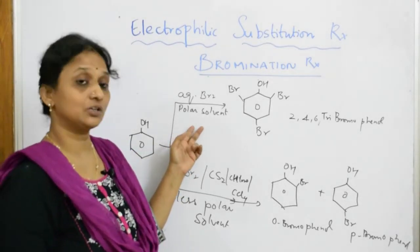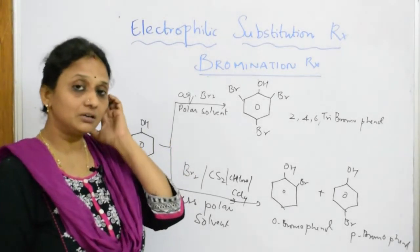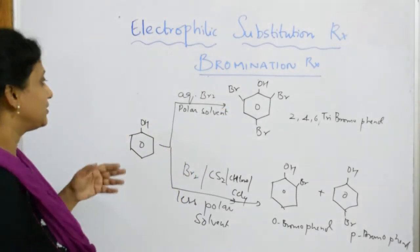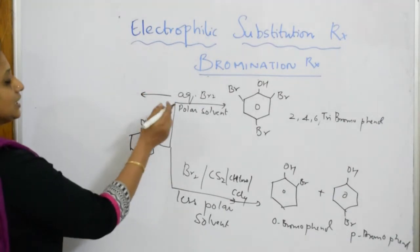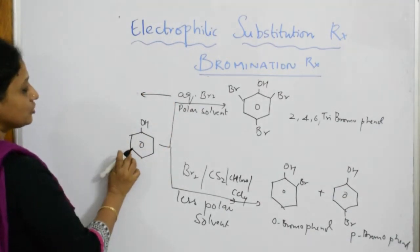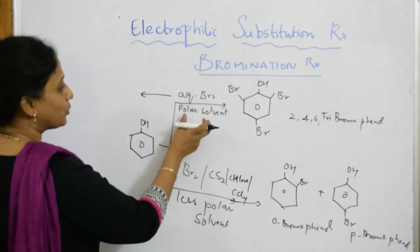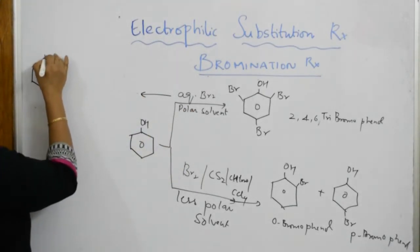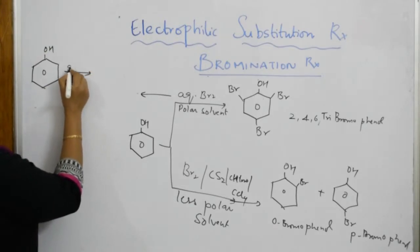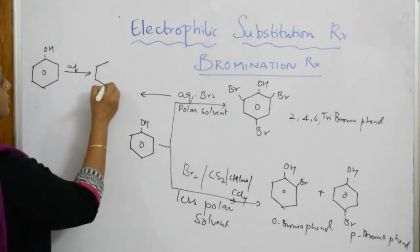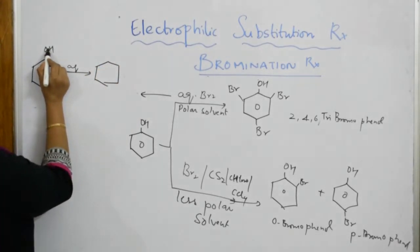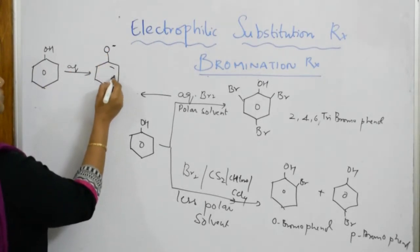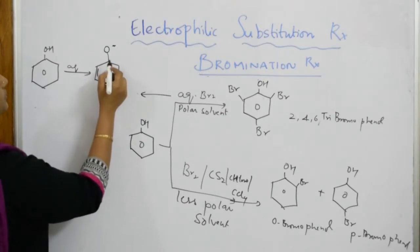Now the question is: why are we getting 2,4,6-tribromophenol in aqueous bromine? The reason is — whenever you are dissolving phenol in an aqueous polar solvent, immediately your phenol will get dissociated. The O–H bond breaks and it forms a phenoxide ion.